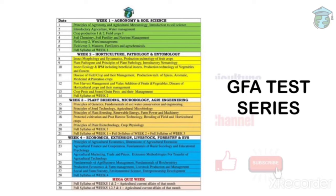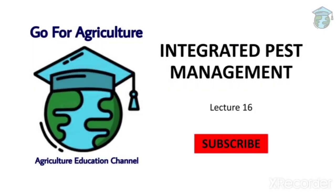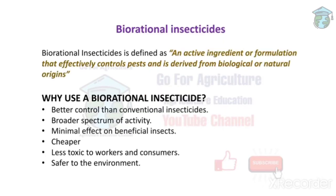Let's start with lecture 16 of IPM - bio-rational control. In this lecture we will discuss insect growth regulators, juvenoids, semiochemicals, anti-feedants, and repellents.